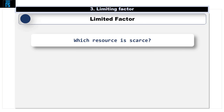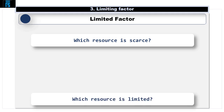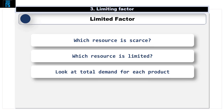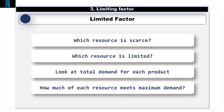The first thing we need to do when considering a problem of this nature is determine which resource is scarce. It is possible that there are details provided to you that suggest more than one resource is limited, so you need to determine which resource is the one that is actually limited. We do this by looking at total demand for each product we make, and how much of each resource is needed to meet that maximum demand. This will identify which resource, if any, does not allow us to fulfil the demand, and it is this resource that is classed as the limiting factor.